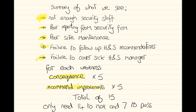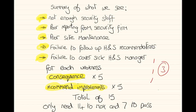To summarise: not enough security staff, poor reporting, poor site maintenance, failure to follow up, and failure to cover the sick health and safety manager. There are five points. For each one, I'm going to talk about a consequence and recommend improvements. For each, I'd get one mark for stating the weakness, one for talking about the consequence, and one for the recommendation — so potentially three marks per weakness. From the above I've got five weaknesses, five times three gives me 15 — I obviously don't need 15, maximum marks are 14 and a pass is seven. So we need to allocate our time appropriately to make sure we get over a pass mark.